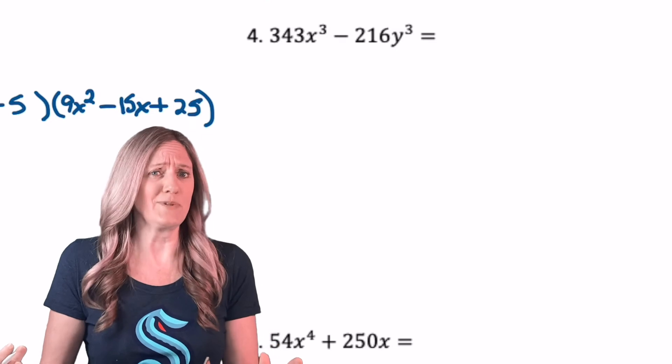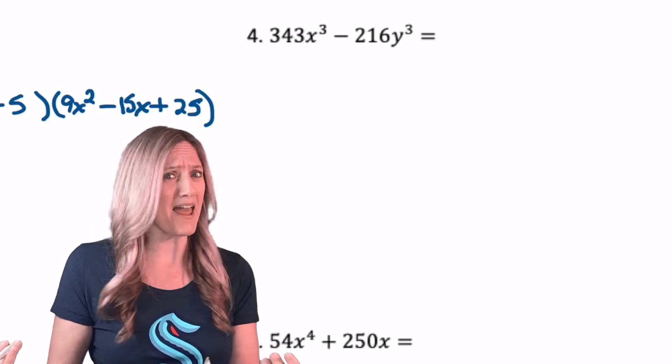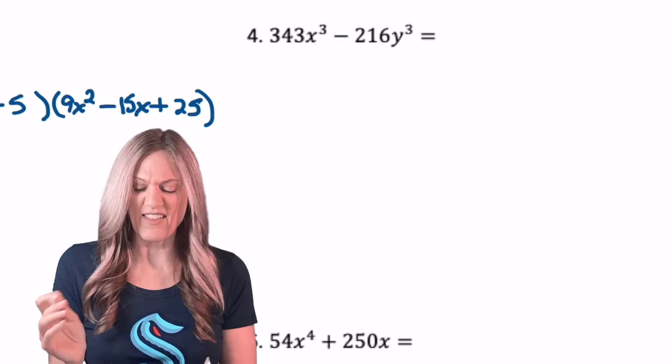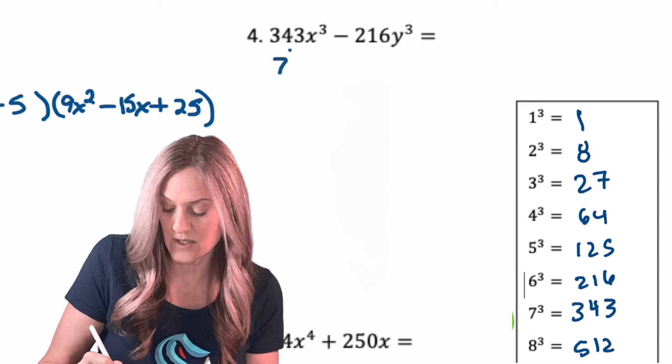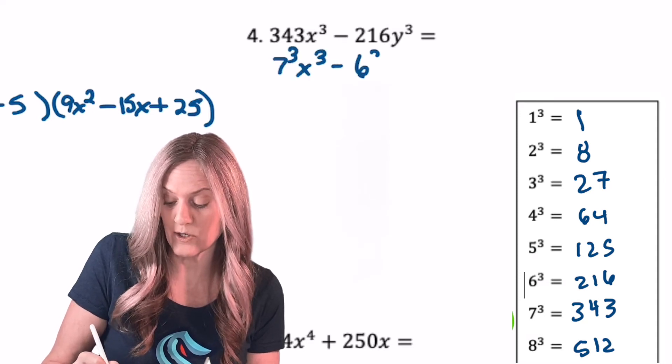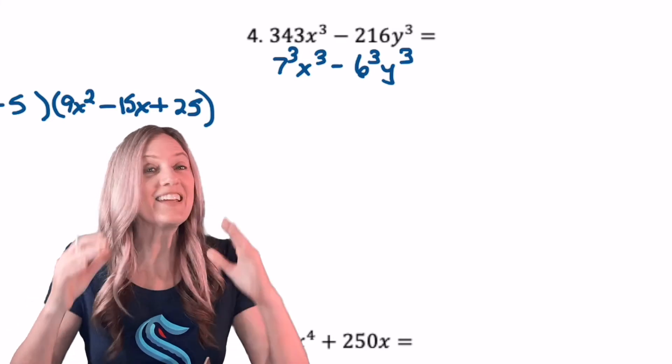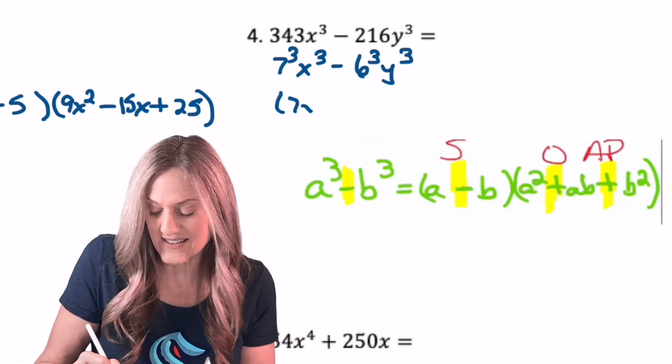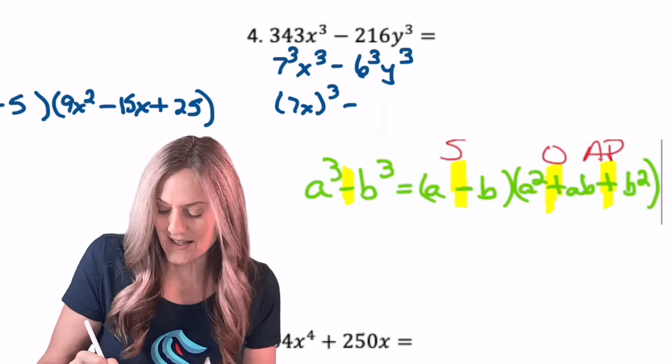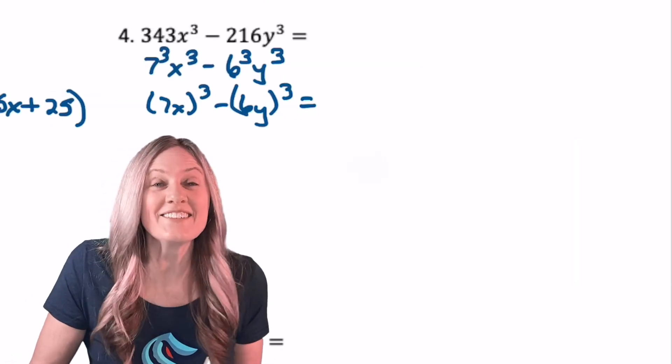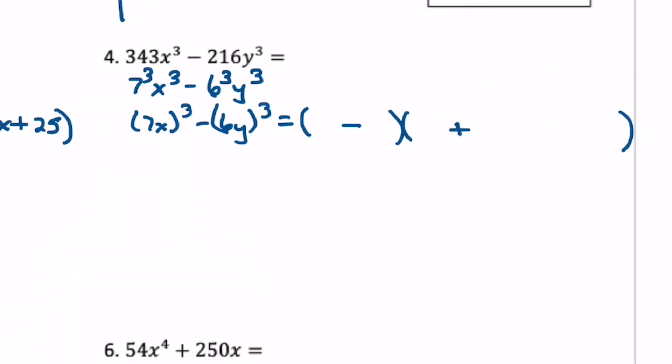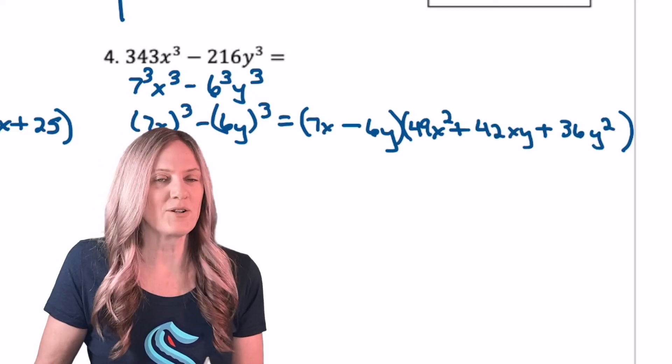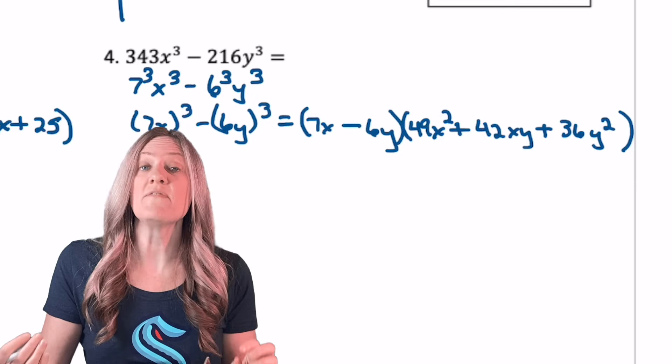Number four has me scared. Not really. It has an x in it and a y in it. It's okay, they're both cubes. And 343, I'm glad we did that list. So that's seven cubed x cubed minus six cubed y cubed. That means the a term will be seven x and the b term will be six y. All righty, what do we do now? Binomial, trinomial, SOAP it, go. That didn't turn out so bad, just so long as we follow that format, right?